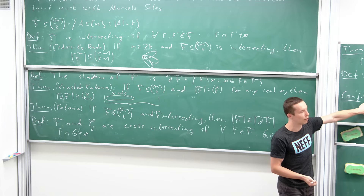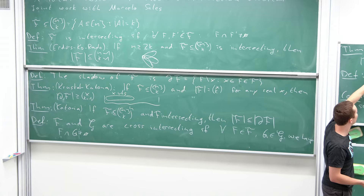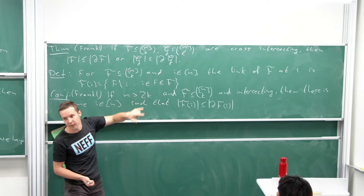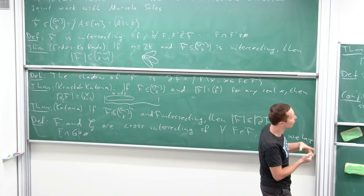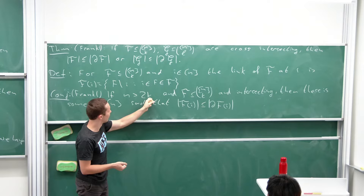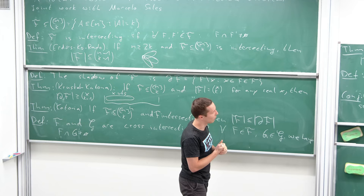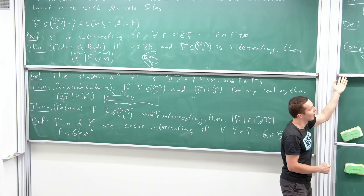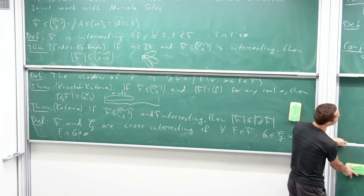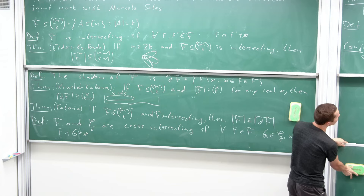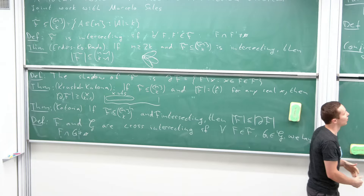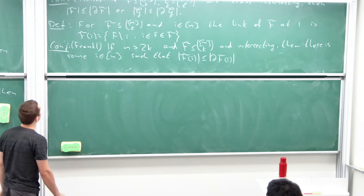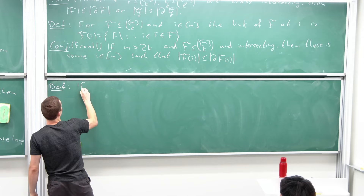In our work we proved both of these conjectures when n is larger than roughly k-squared. The theorem actually tells us much more than the conjecture, and for that we need a bit more notation. In particular, for n large enough our theorem implies that conjecture.